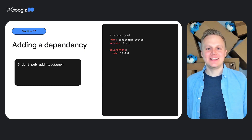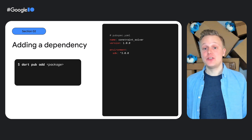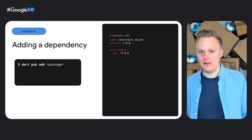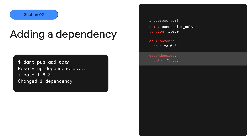Back to dependencies. Packages can depend on other packages. When adding a dependency on a package, we usually write a constraint on the version number of the package in the pubspec.yaml. We can do this using the dart pub add command, which takes a package name as an argument. For example, to add the path package, we can run this command. This automatically finds the latest compatible version of path, adds path to your pubspec.yaml, and writes a constraint on the version number of the path package.